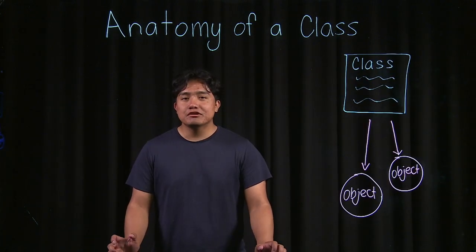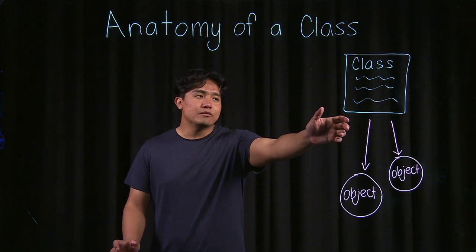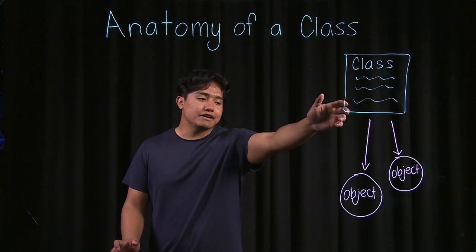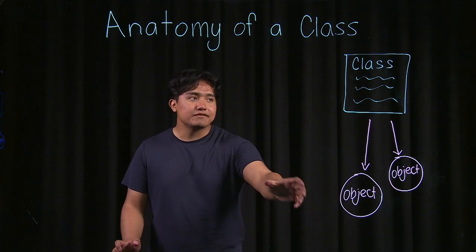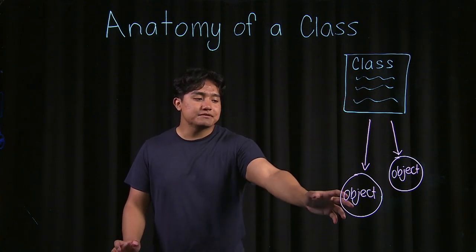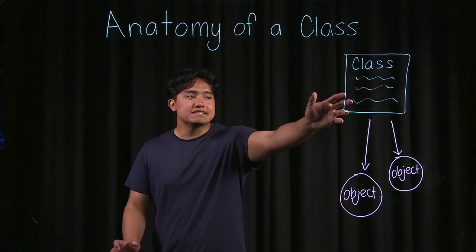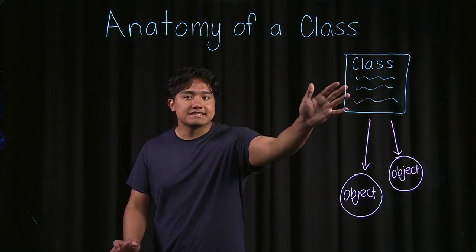Now for a brief overview of how classes work. If we think of a class like a blueprint, we can use this blueprint that we defined to create objects, which are known as instances of this class. So we create objects and they share all of the methods and behaviors that we defined in this class.